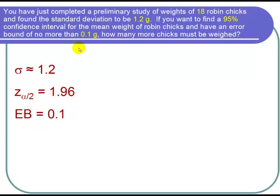And then finally our error bound is no more than 0.1 grams, so our EB is 0.1.